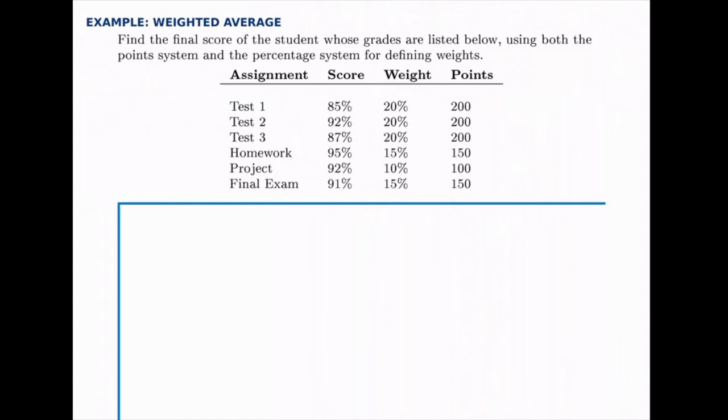Now notice that usually we'd be given either the weight or the points. In this case we're given both, and if you look closely there are a total of 1,000 points that they could earn. If you add up all those points you should get 1,000, and if you divide each of those point values by 1,000 you'll get the percentages that are listed here.